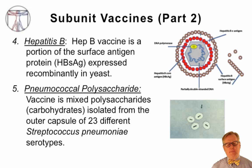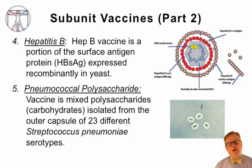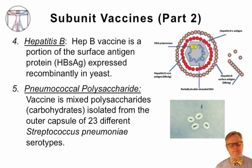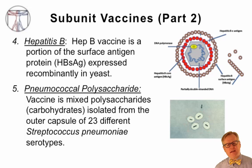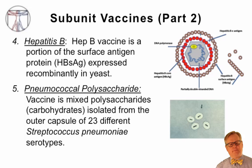Another subunit vaccine example is the pneumococcal polysaccharide vaccine, where polysaccharides or carbohydrates from the outer capsule of 23 different serotypes of Streptococcus pneumoniae are isolated and given as the vaccine antigen.